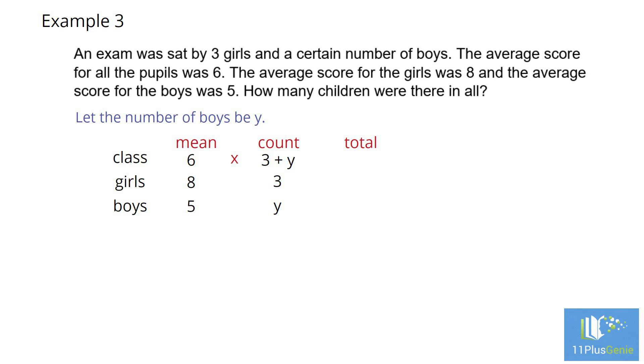You must just remember here that we times the 6 with both the 3 and the Y to get 18 plus 6Y. Girls, total equals 8 times 3 equals 24. Boys, total equals 5 times Y equals 5Y.